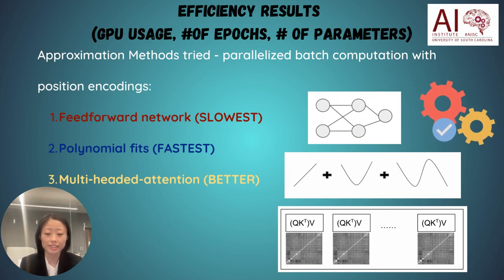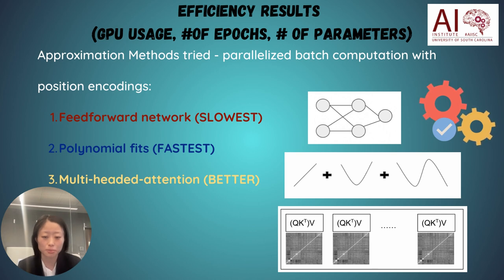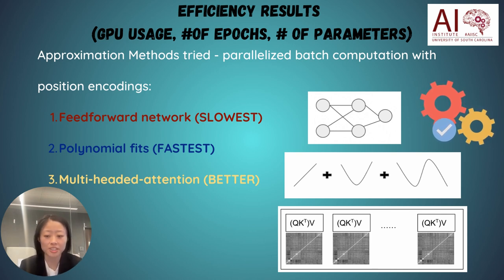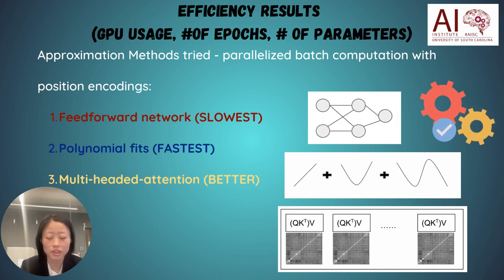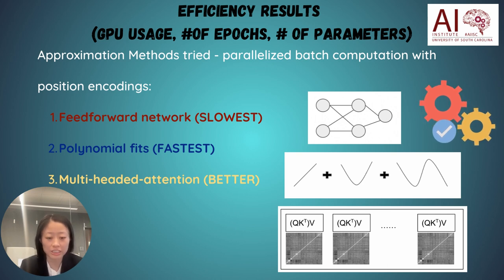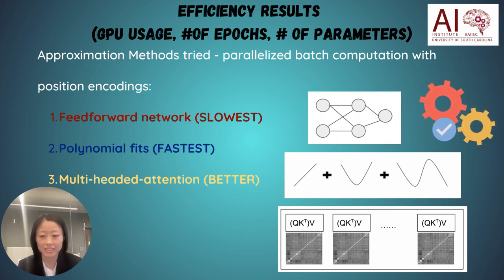We found that polynomial approximation performs most efficiently, followed by the multi-headed attention-based neural network, followed by the two-layer feed-forward network. Our findings indicate that it is worth exploring different architectures for the next generation of neuro-symbolic AI systems.